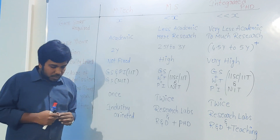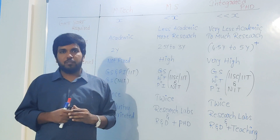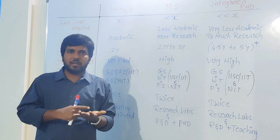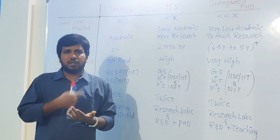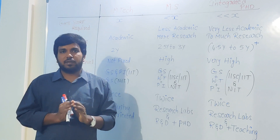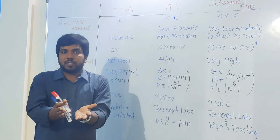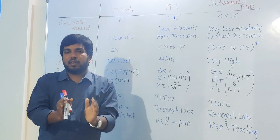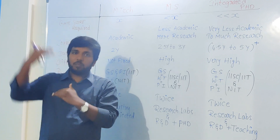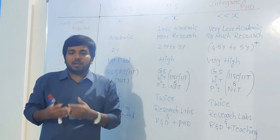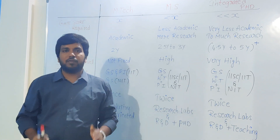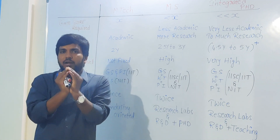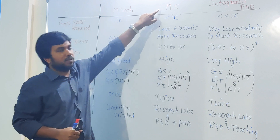For example, a student who joined mechanical engineering BTech will study thermal engineering, production, manufacturing, heat transfer, thermodynamics — everything. But when you come to masters and select production specialization, you will study all topics related to only production engineering. In BTech you study many subjects, but in MTech your focus will be only on that specific field.